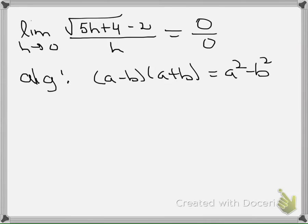So we're going to do that here. We've got the square root of 5h plus 4 minus 2 divided by h.